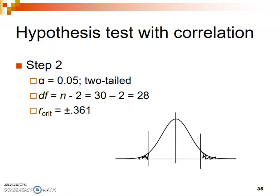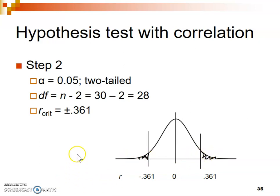That null value is zero in the middle, and we looked up our critical values of R and found them to be 0.361. This is a two-tailed test, so we draw a line at positive 0.361 and another at negative 0.361, shading in the critical regions — all correlation values more extreme than that critical value. Our correlation needs to be more extreme than negative 0.361 or more extreme than positive 0.361 to be considered significant.